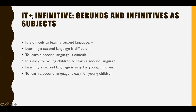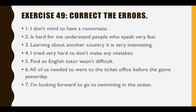Look at the structure 'it plus infinitive' and how it can be rewritten. 'It is difficult to learn a second language' means the same as 'learning a second language is difficult' and 'to learn a second language is difficult.' These three sentences have basically the same meaning. Similarly: 'it is easy for young children to learn a second language,' 'learning a second language is easy for young children,' 'to learn a second language is easy for young children.' This is followed by exercises.